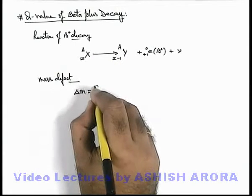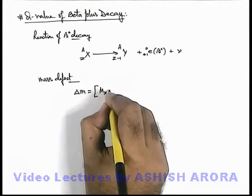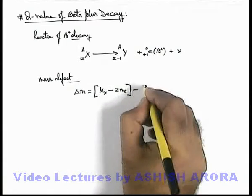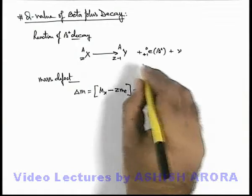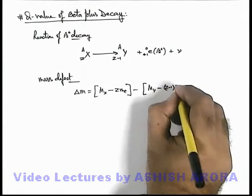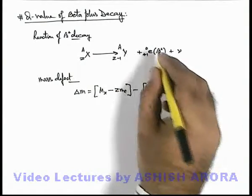So nuclear mass of X here we can take as M_X minus Z M_e. Minus in case of Y we use M_Y minus (Z minus 1) M_e. This'll be the mass of nucleus of Y.